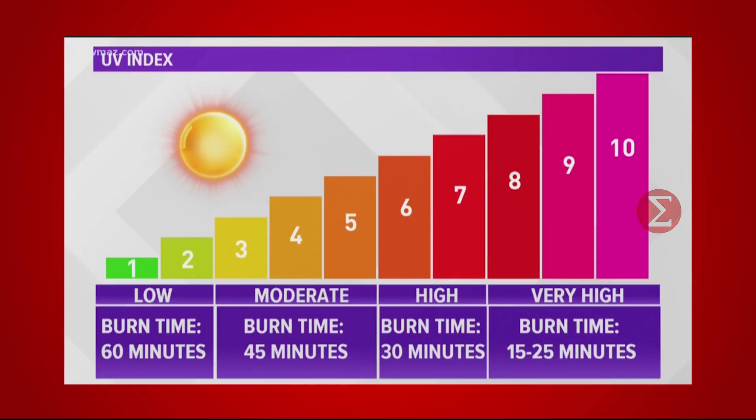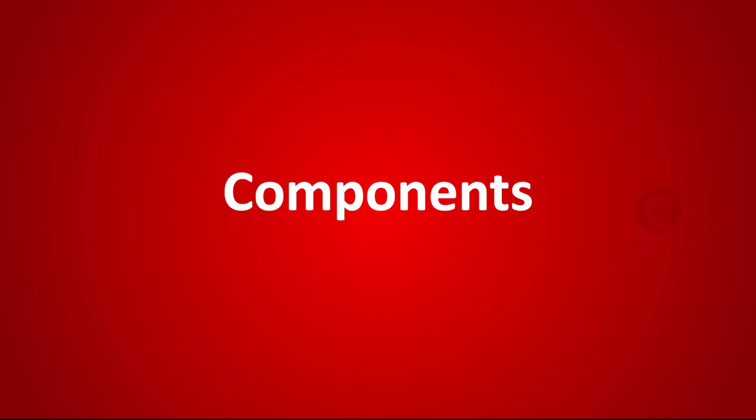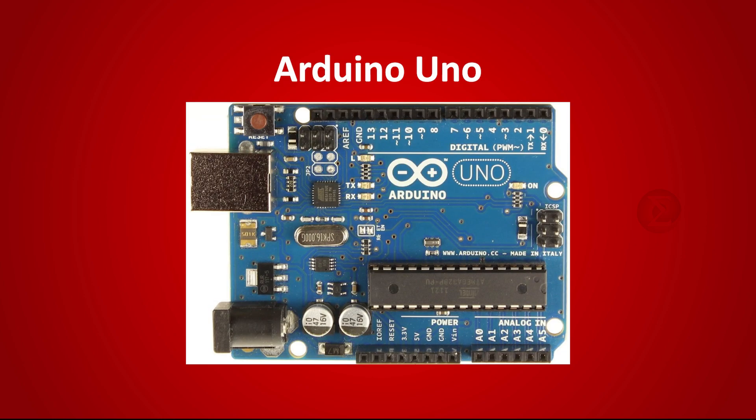With the help of this circuit, people will understand the need to adopt protective measures against UV radiations. The components used to develop this project are the Arduino Uno board, over which the code will run.